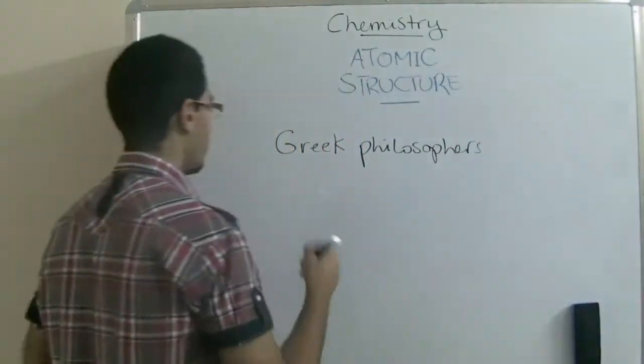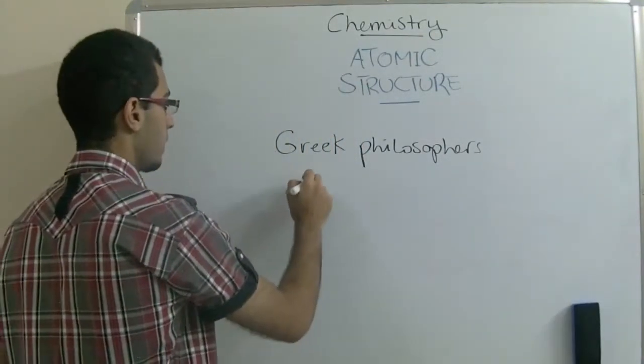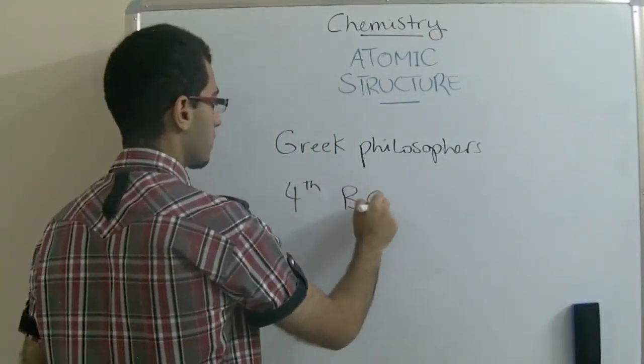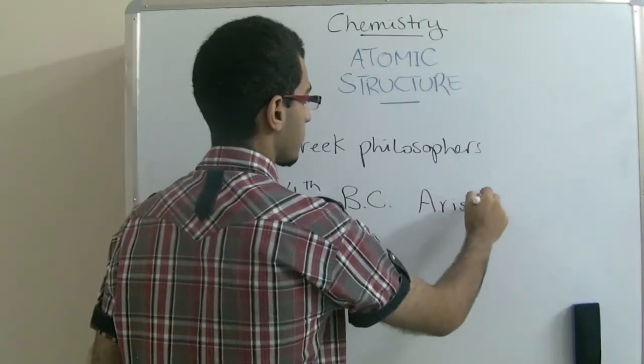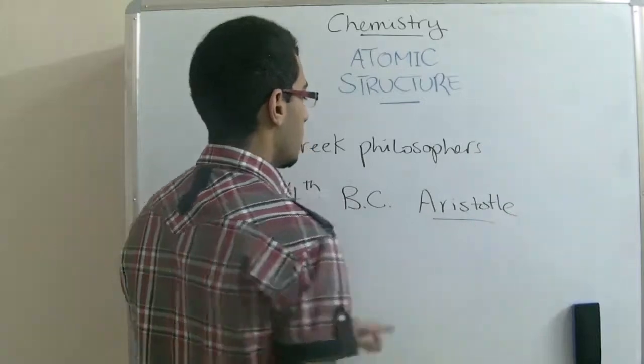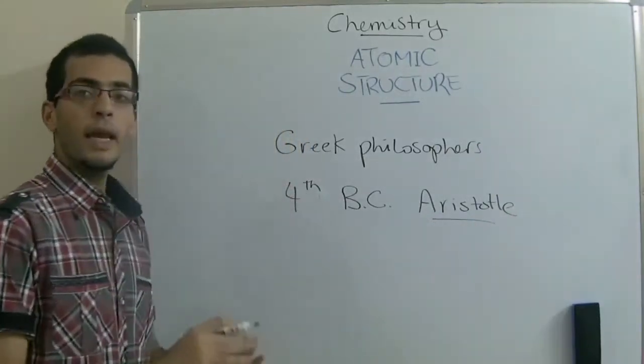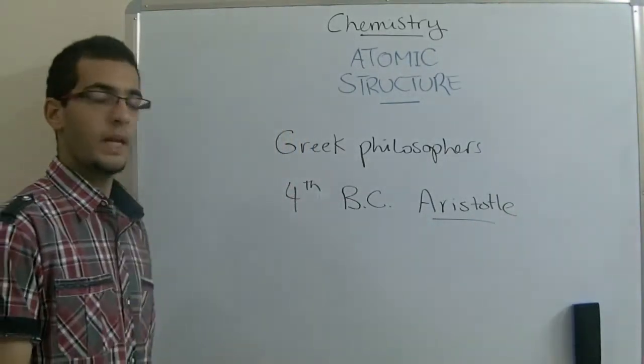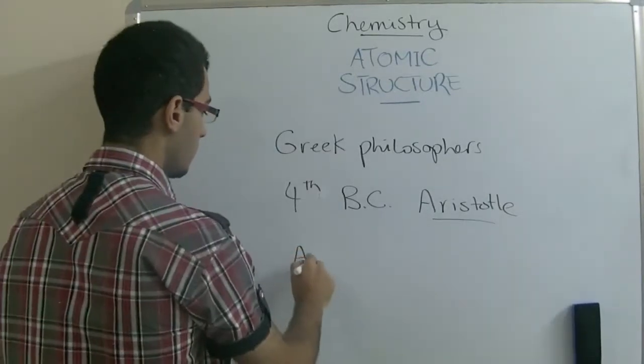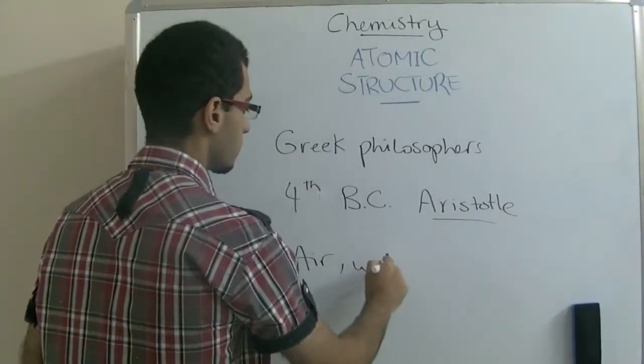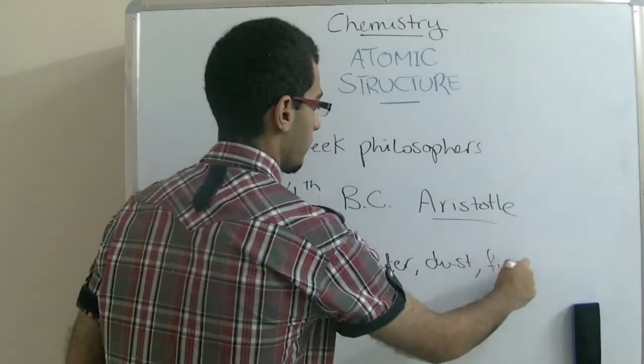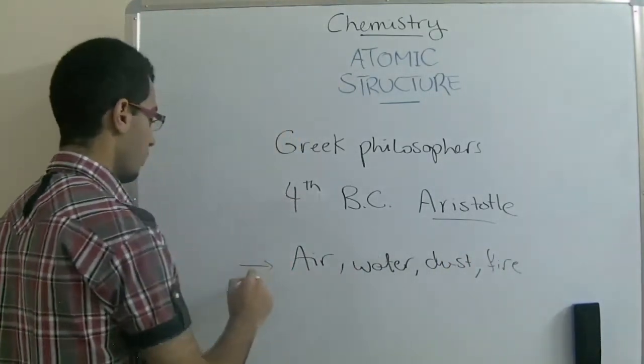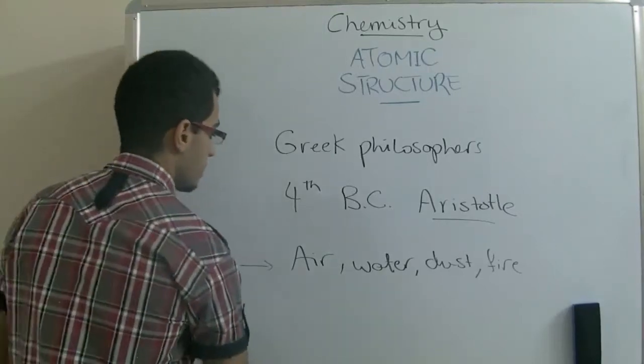In the fourth century before Christ, a philosopher called Aristotle said that any matter consists of four main elements: air, water, dust, and fire. Of course, this is not true, but he said so.